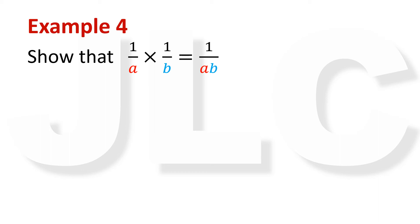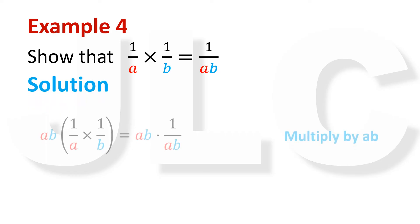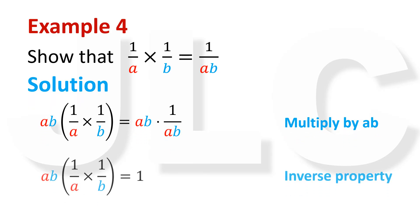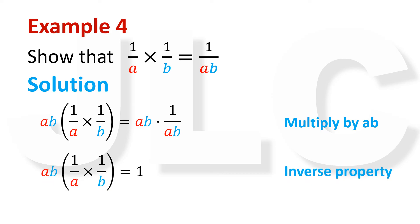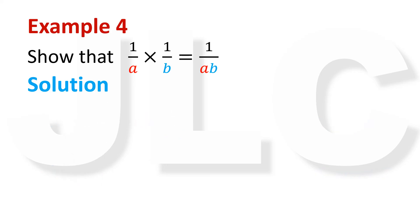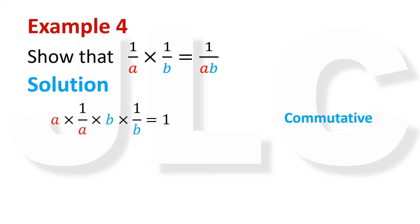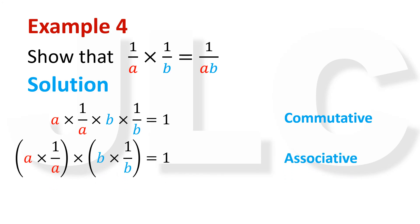Example 4: Show that 1 over A times 1 over B equals 1 over AB. To show this, we multiply both sides of the equation by AB. The right-hand side reduces to 1 from the inverse property of multiplication. By commutative property, we can arrange the left-hand side as A times 1 over A times B times 1 over B. The terms reduce to 1 from the inverse property. Since both sides reduce to 1, therefore 1 over A times 1 over B equals 1 over AB.